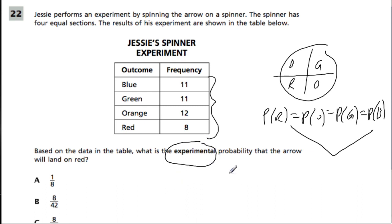Experimental probability takes the number of successes that you actually had in a trial. So like if you're spinning for blue, how many times did you actually get blue?